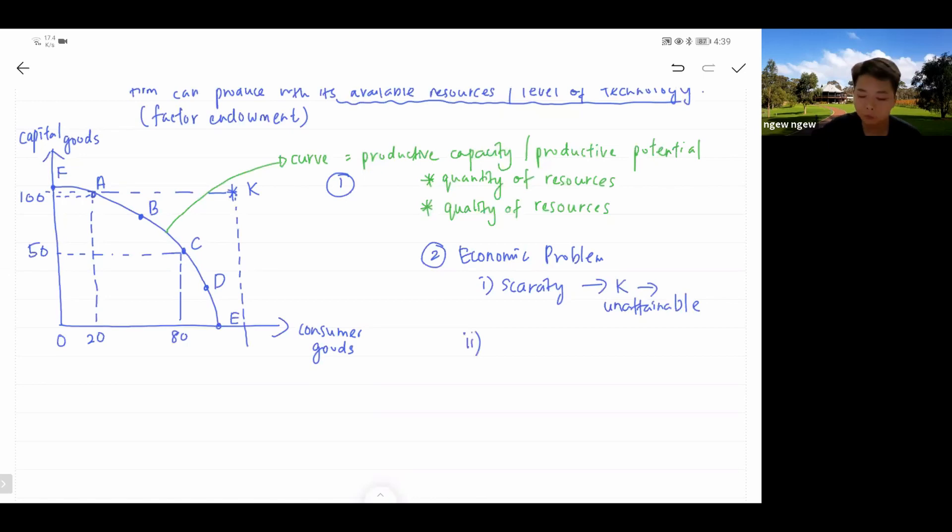Second economic problem we learn is choice. All the combinations on PPC or below PPC are your choices. But because we assume resources are fully utilized, we assume that you are producing on the PPC. So all the combinations that you see from A all the way to F are considered your choices. But what are the factors affecting which choices you go for? It is highly depending on government policies if it is controlled by the government.